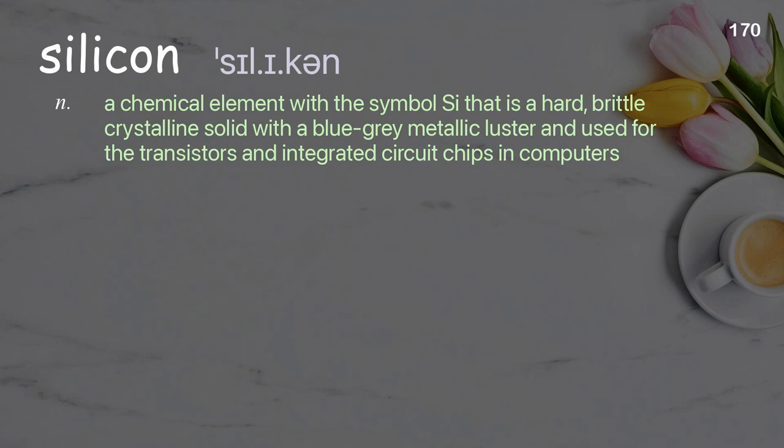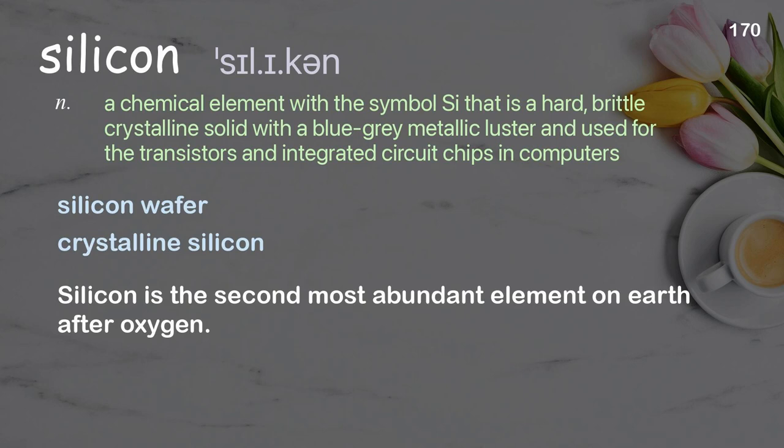Silicon: a chemical element with the symbol Si that is a hard, brittle crystalline solid with a blue-grey metallic luster, used for transistors and integrated circuit chips and computers. Examples: silicon wafer; crystalline silicon. Silicon is the second most abundant element on earth after oxygen.